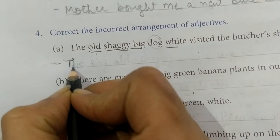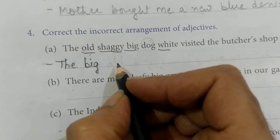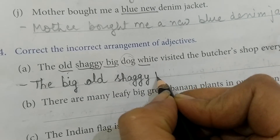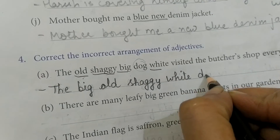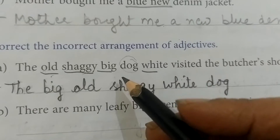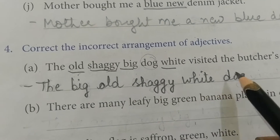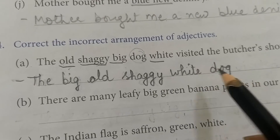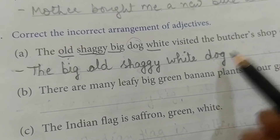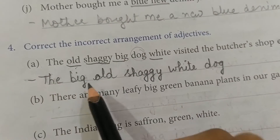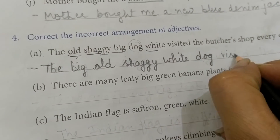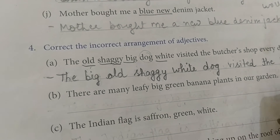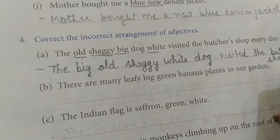We will write it like this: 'The big, old, shaggy, white dog.' Remember, adjectives always come before the noun. Whenever we use adjectives, all of them must be written before the noun — we cannot put the noun first and adjectives after. So the full sentence is: 'The big, old, shaggy, white dog visited the butcher's shop every day.'